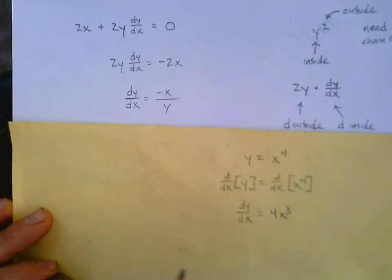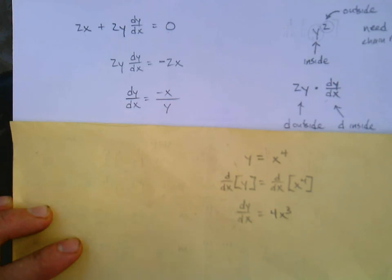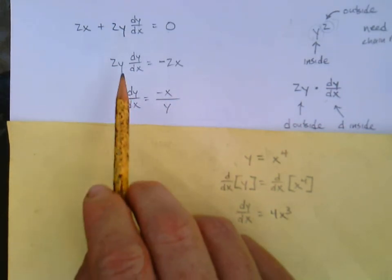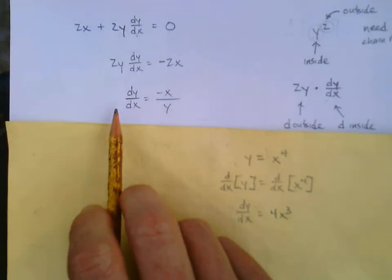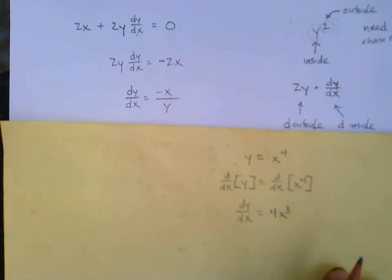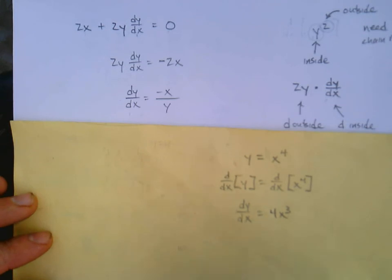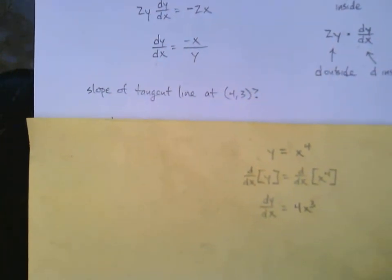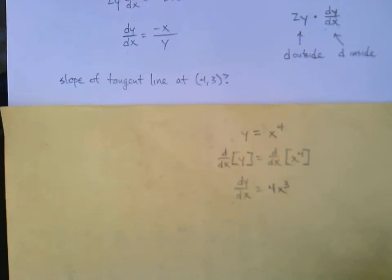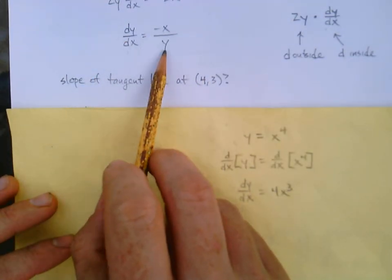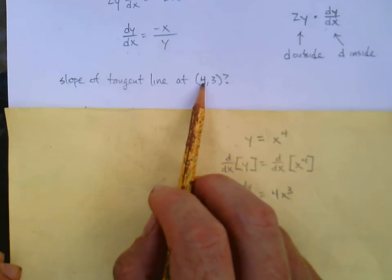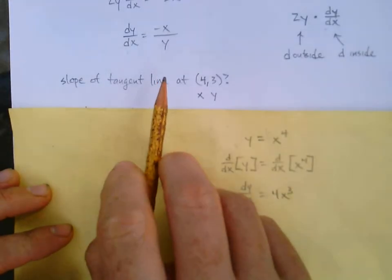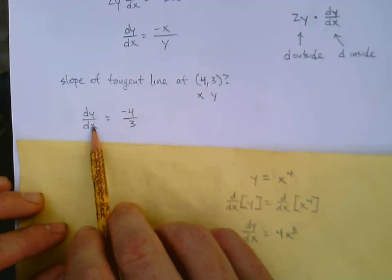If you can accept that the derivative of y squared is 2y times dy/dx because of the chain rule, then step two makes sense — we need to solve for dy/dx. We subtract 2x and divide by 2y, giving dy/dx equals negative x over y. Applying this at the point (4, 3): plug in x equals 4 and y equals 3, and dy/dx equals negative four thirds.